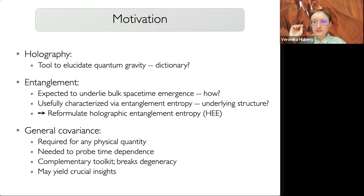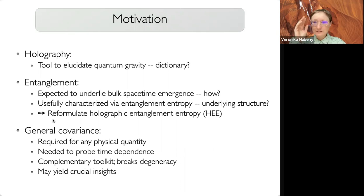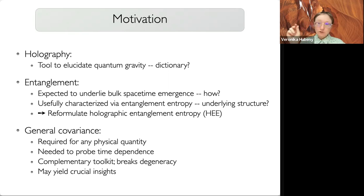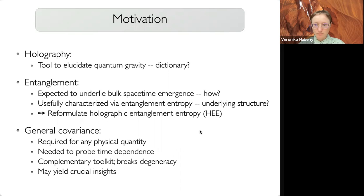This brings me to the motivation of my talk: we want to elucidate quantum gravity by holography, which requires understanding the dictionary better — in particular, how entanglement underlies bulk emergence. What we will do is a small step: reformulate the holographic entanglement entropy prescriptions fully covariantly but in different, slightly different pictures, with the hope that new features will inspire understanding of this map and ultimately bulk emergence.